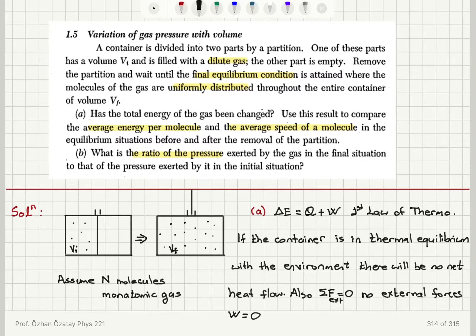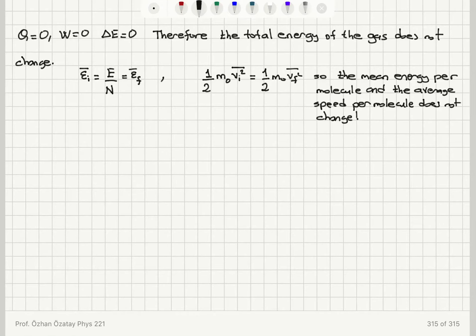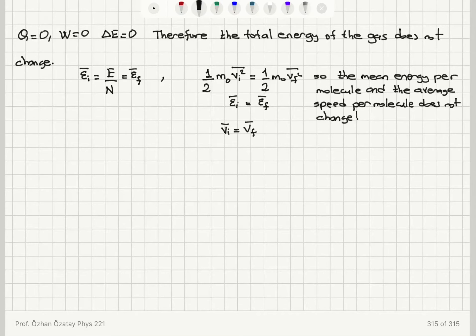We have used the result that total energy is conserved to compare the average energy per molecule and average speed before and after removal of the partition. Before, it was E/N; after, it is still E/N. And since one-half m₀ v_i² bar equals one-half m₀ v_f² bar, we conclude that v_i bar equals v_f bar — the same mean energy per molecule and the same average speed.